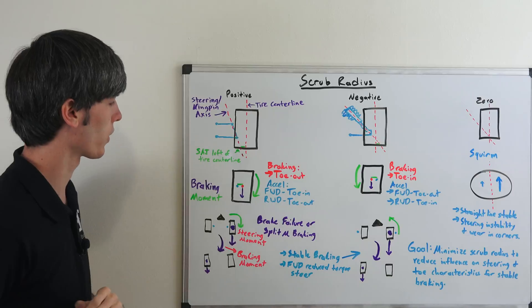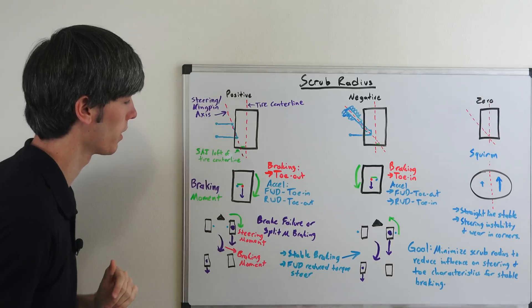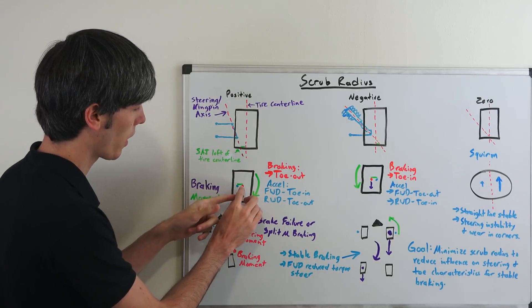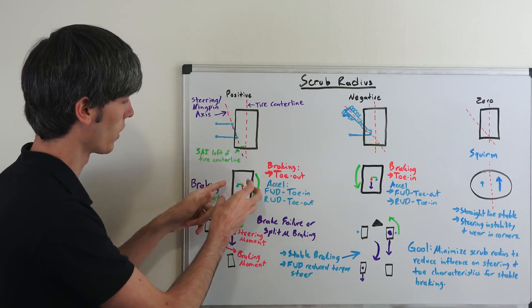So let's look at braking for example. So here we have this tire right here. We're looking down at it in braking and so what happens is here you have the center point of the tire that red dot and then here you have the point at which this tire pivots.